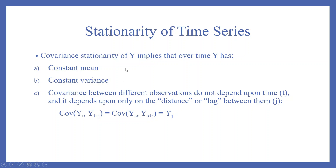Covariance stationarity of Y implies that over time Y has constant mean, constant variance. Covariance between different observations does not depend upon time t, and it depends only on the distance or lag between them, that is j.